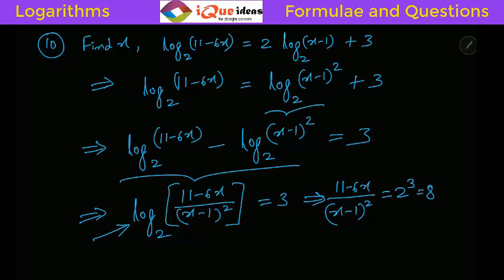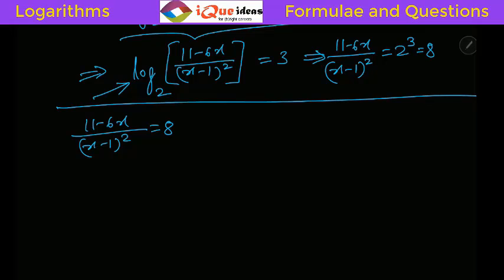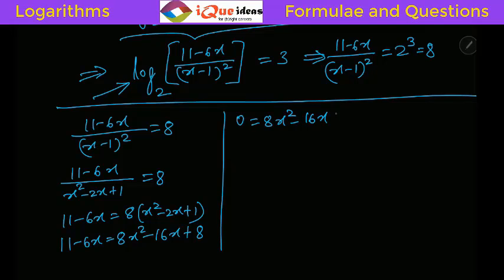Now solve: (11−6x)/(x−1)^2 equals 8, where (x−1)^2 equals x^2−2x+1. Cross-multiplying: 11−6x equals 8(x^2−2x+1) equals 8x^2−16x+8. Bringing everything to one side: 0 equals 8x^2 − 16x + 8 − 11 + 6x, which simplifies to 8x^2 − 10x − 3 equals 0.